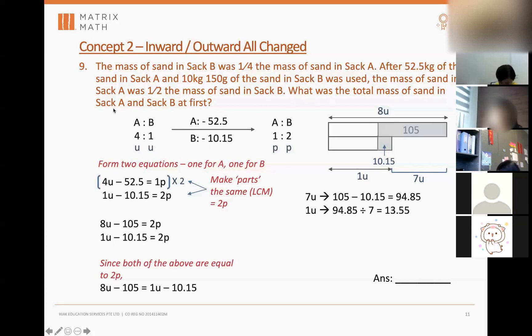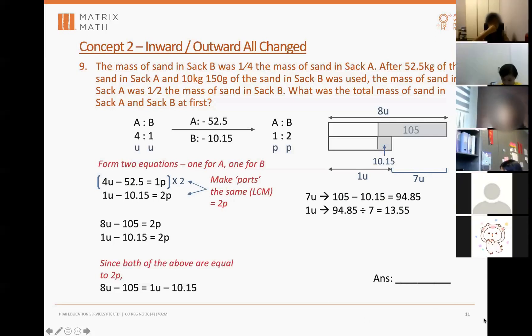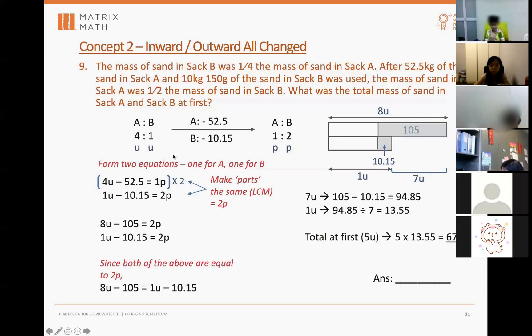What was the total mass of the sand in Sack A and B at first? How many units are there at first, Giselle? Very good. How do you get 5? 4 plus 1, right. So 5 units will be 5 times 13.55, you get 67.75. So this is the answer. Okay, good job, all right you too.